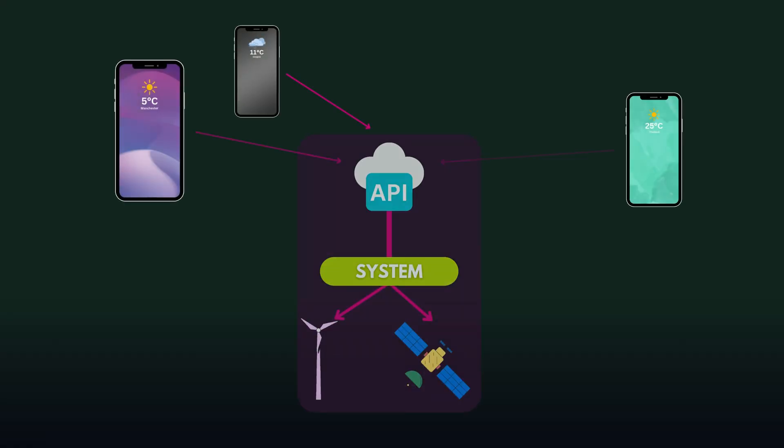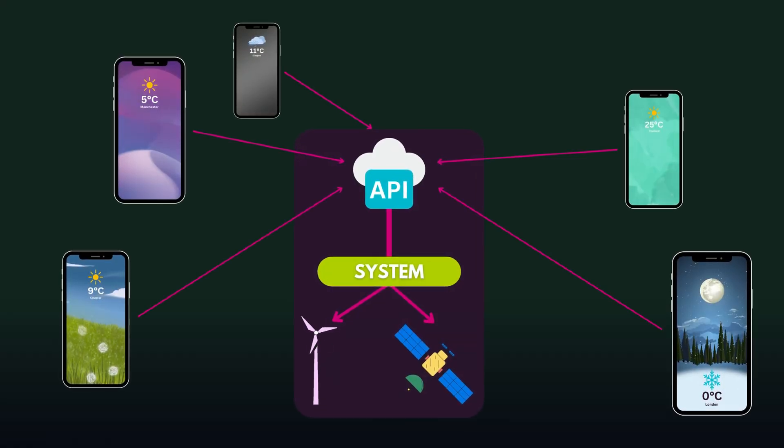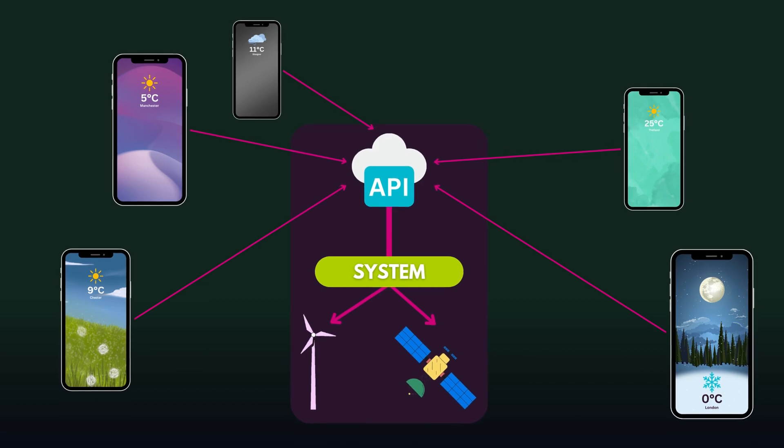So what makes APIs so useful? Well, they let different applications talk to each other without them having to build everything from scratch. It allows apps to use, for example, a weather API which has access to satellite data and weather stations — which would really be unattainable for an app if they had to build weather stations themselves. It would be very expensive. So having access to an API makes it really easy to share data.